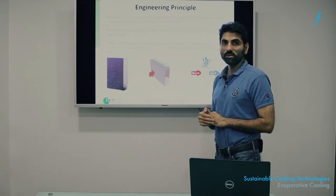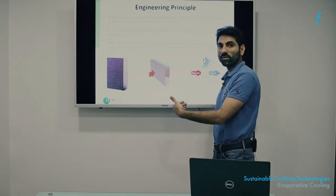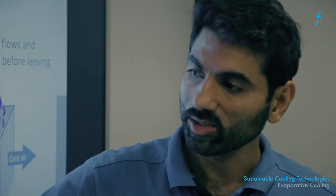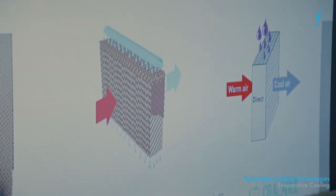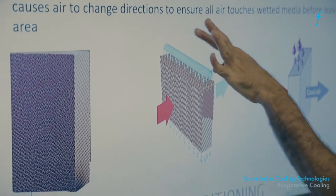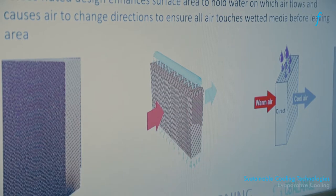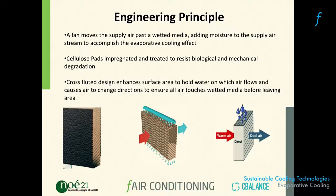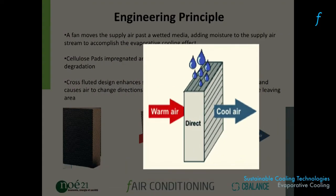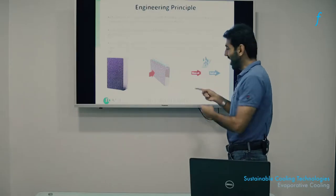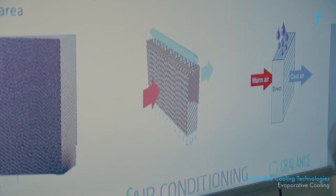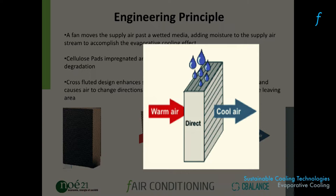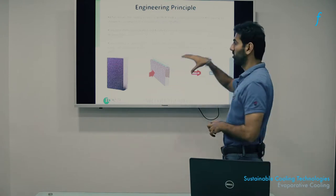A cellulose pad with a lot of surface area per unit volume is kept continuously wet. A fan blows warm air (around 42°C) through the pad. The water picks up the latent heat of evaporation from the air, and what comes out on the other side is cool but humid air, which cools people sufficiently in hot and dry regions of India. That's how a science principle is converted into an engineering technology.